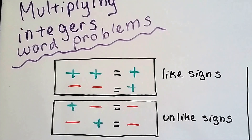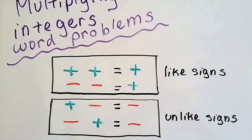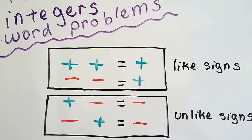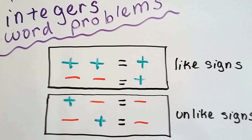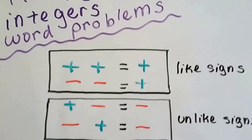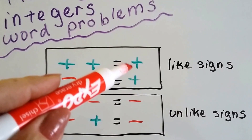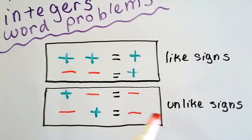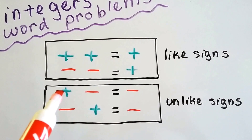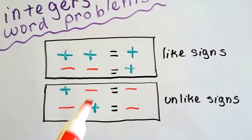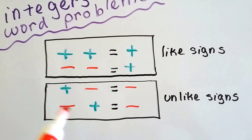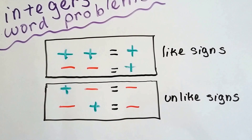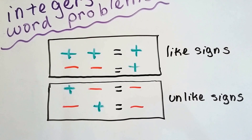So we talked about in the last video, when our equation has like signs that we're multiplying together — like two positives or two negatives — then the product is going to be a positive. And if they have unlike signs, if we're multiplying a positive to a negative or a negative to a positive, our product is going to be a negative.